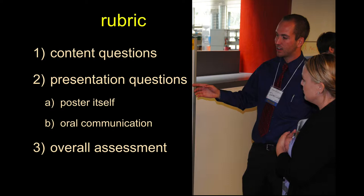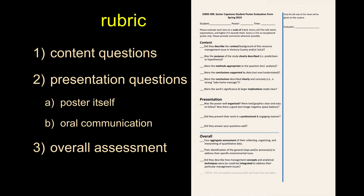We have a rubric for evaluating our students. They're broken down into some content questions and some presentation questions, and then we have an overall assessment. Historically, we did that through paper forms, as you see here. Content, presentation, overall — you score these guys using a score from 1 to 5. 5 being fantastic, best thing you've ever seen in your life. 3 being fine, meeting your expectations. Less than 3 did not do particularly well in terms of meeting the expectations of that particular question.